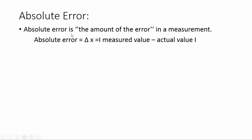What is absolute error? Absolute error is the amount of the error in a measurement. Absolute error equals ΔX = |measured value - actual value|. So absolute error is the difference between measured value and actual value and is represented by ΔX.